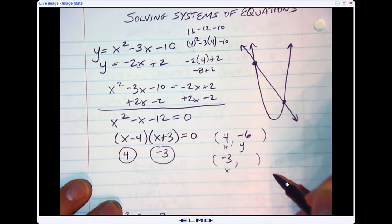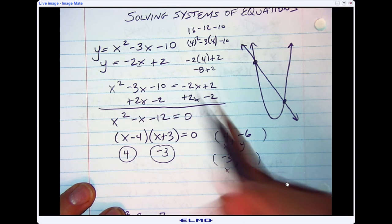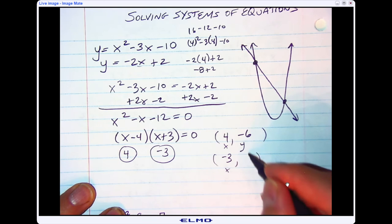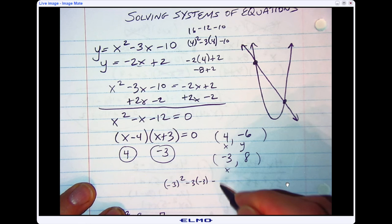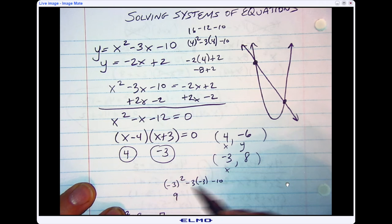I'm going to do the same thing for the second one. If I put negative 3 in for x, negative 3 times negative 2 is 6 plus 2 would be 8. If I put it in the top one here, negative 3 squared minus 3 times negative 3 minus 10. Well, negative 3 squared is 9. Negative 3 times negative 3 is 9. 9 plus 9 is 18 minus 10 is 8. So it works.